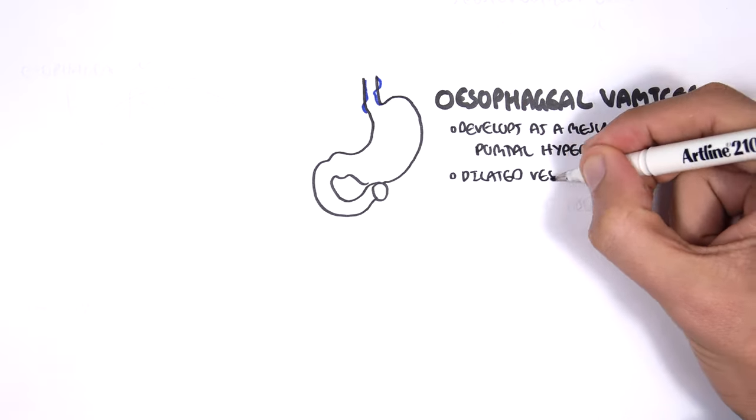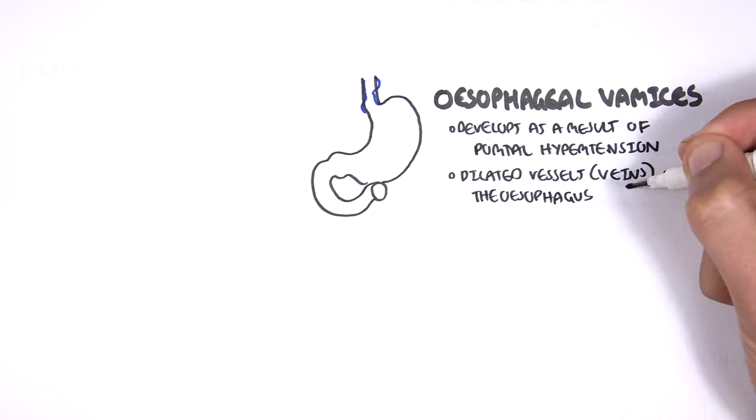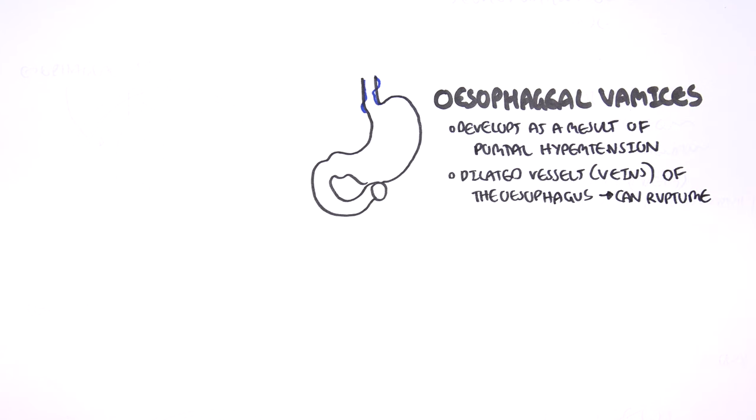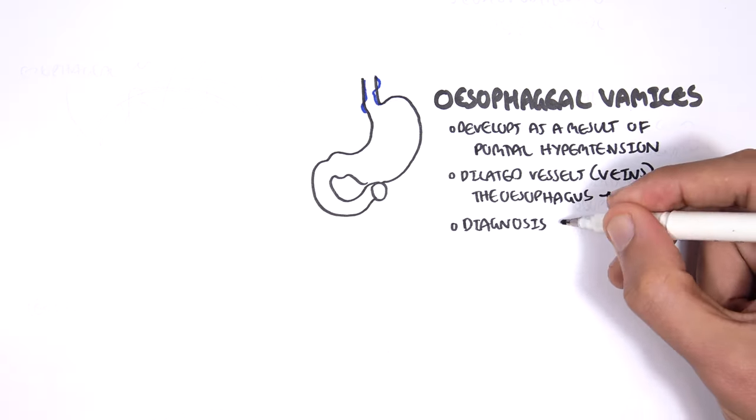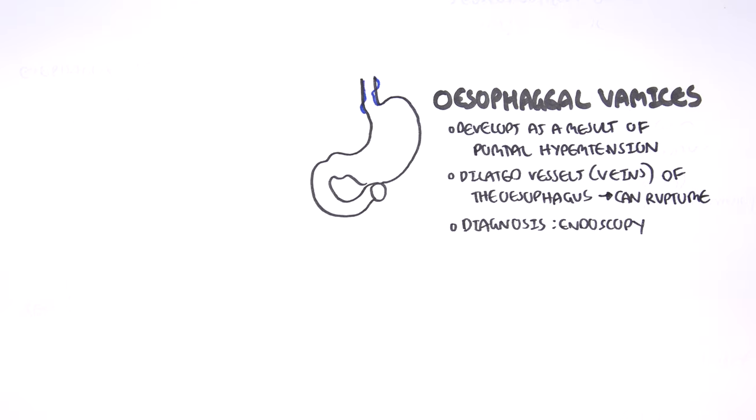Esophageal varices is where we have dilated vessels, veins of the esophagus. These dilated veins, when they dilate, they can rupture, and this is very serious and dangerous. Diagnosis of esophageal varices is using an endoscope.